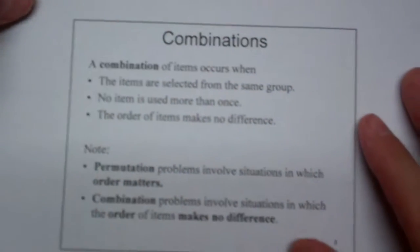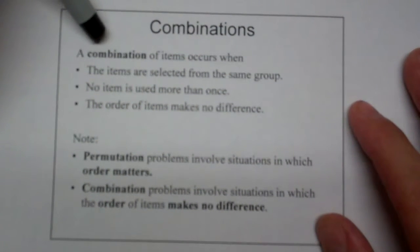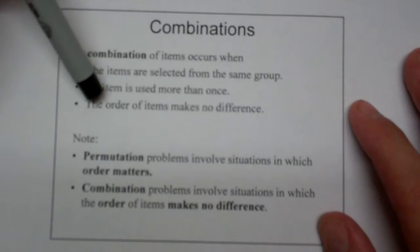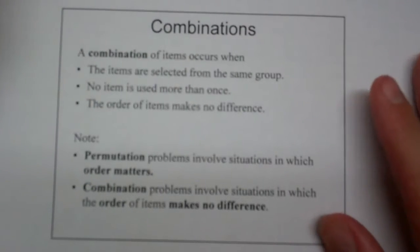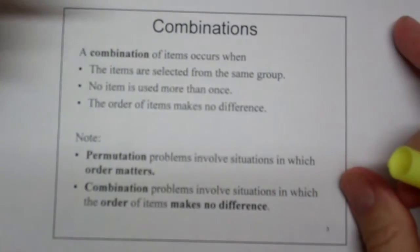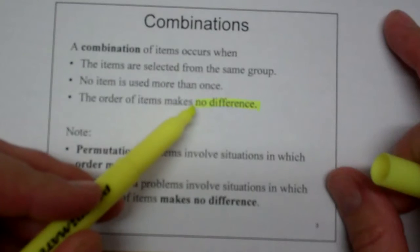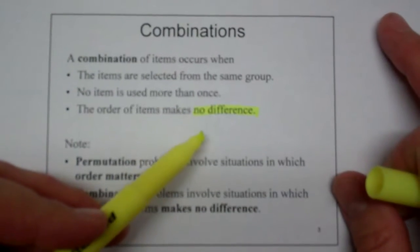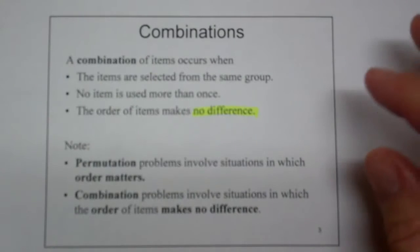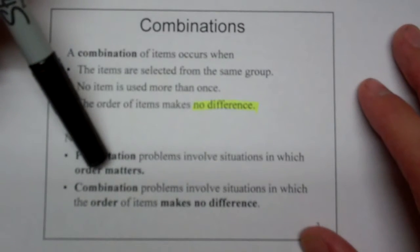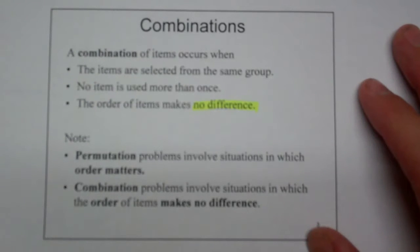So let's formalize that. A combination of items occurs when the items are selected from the same group, no item is used more than once, and the order of the items makes no difference. This is the huge difference between a combination and a permutation. For a combination, the order of the items makes no difference. For a permutation, it makes all the difference in the world. A permutation involves situations where order matters, and combinations do not.